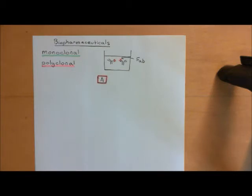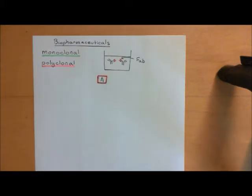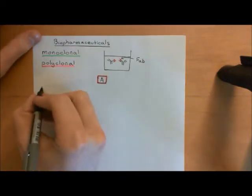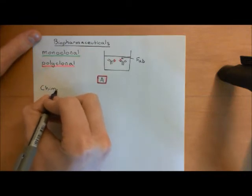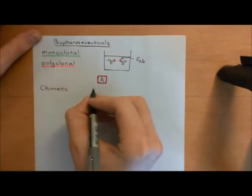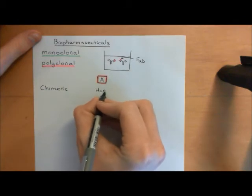We'll see loads of examples of monoclonal antibodies which bind to and neutralize pro-inflammatory cytokines involved in rheumatoid arthritis — tumor necrosis factor alpha being the principal one, with a huge number of different monoclonal antibodies that bind to certain epitopes of TNF alpha. Before going on to the specific examples, I just want to cover the difference between a chimeric monoclonal antibody and a humanized monoclonal antibody.